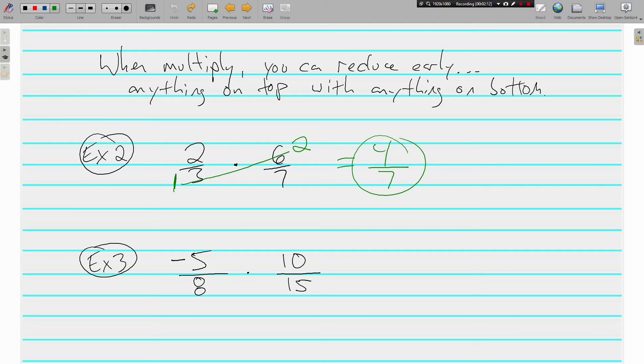Example 3, a negative times a positive. The signs are different so my answer is going to be negative. And I want to reduce early. I know 5 and 15 both have a common factor of 5. 5 goes into 5 1 time and 5 goes into 15 3 times. 8 and 10 also have a common factor of 2. 2 goes into 8 4 times and 2 goes into 10 5 times. So now we have 1 times 5 is 5 and 4 times 3 is 12. And we already knew it was negative because the signs were different. Negative 5 12ths.